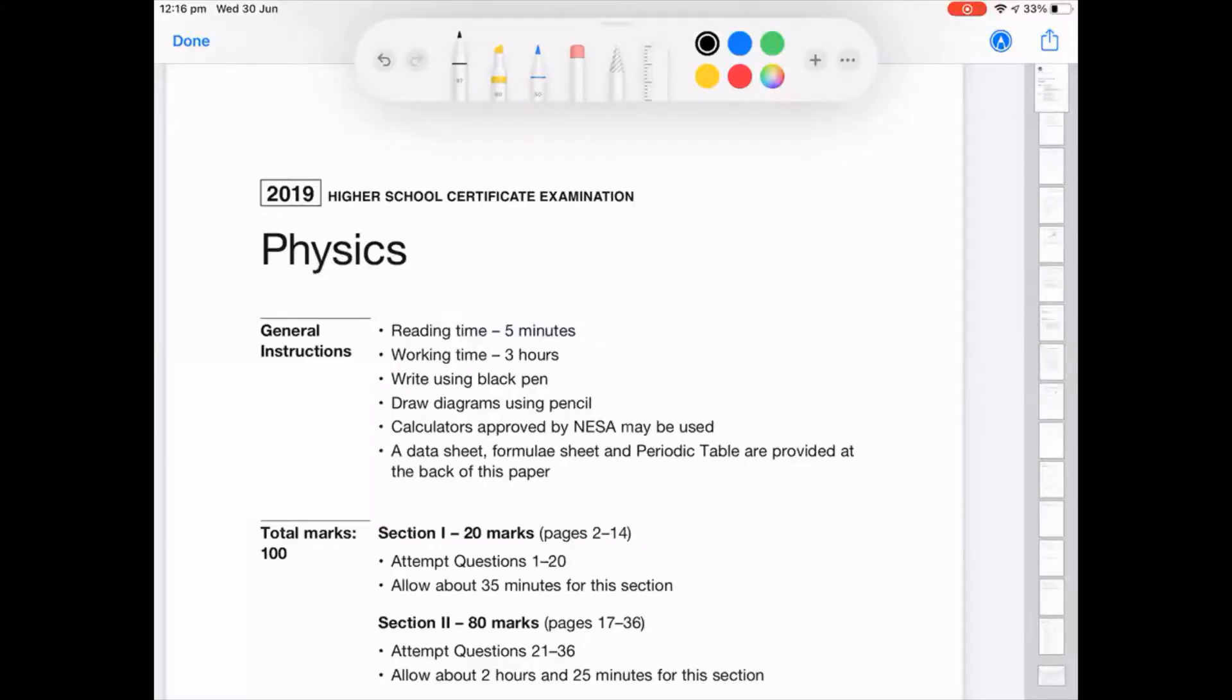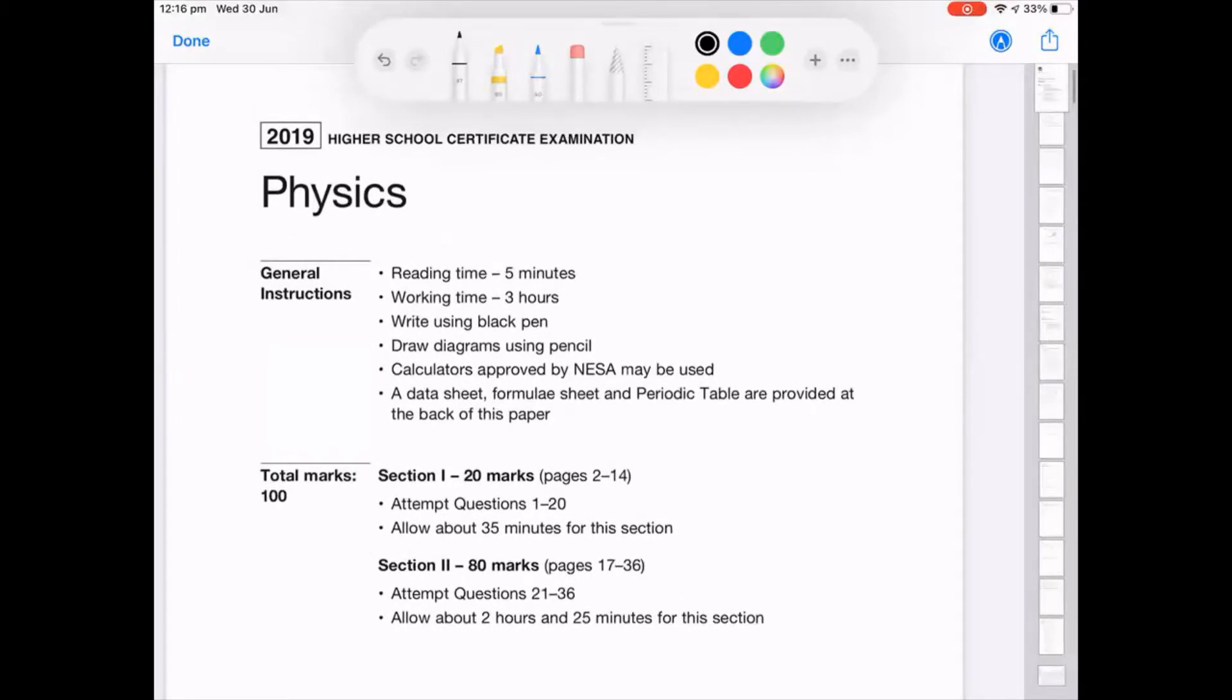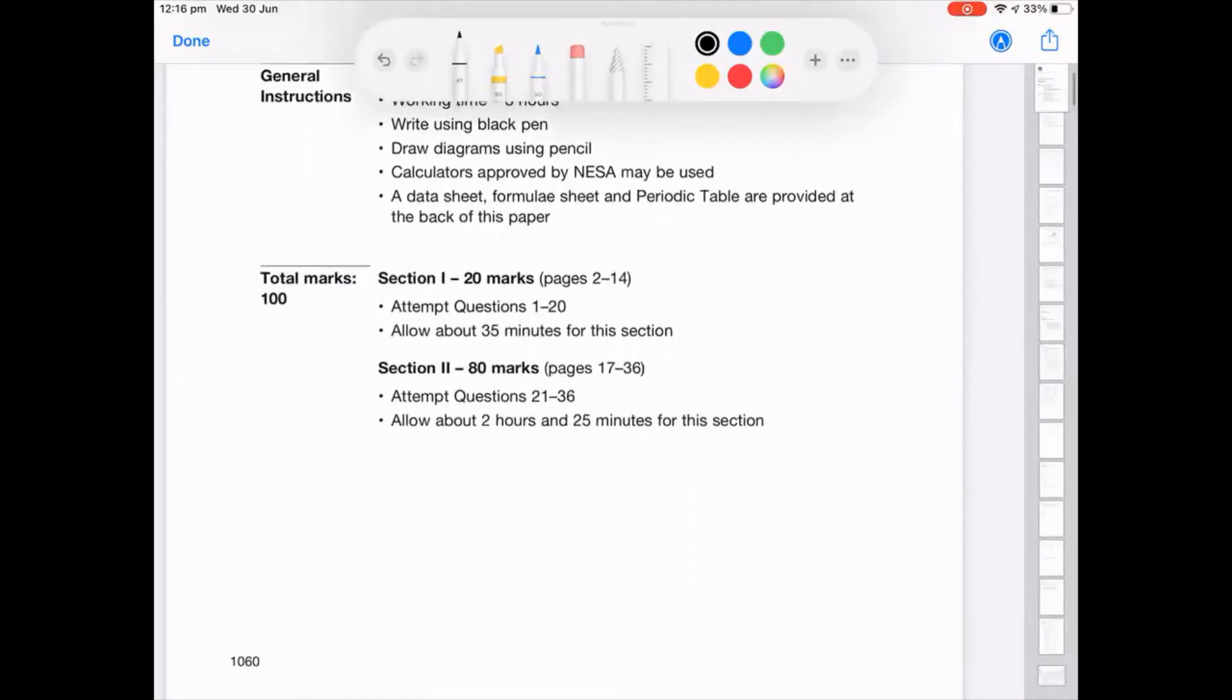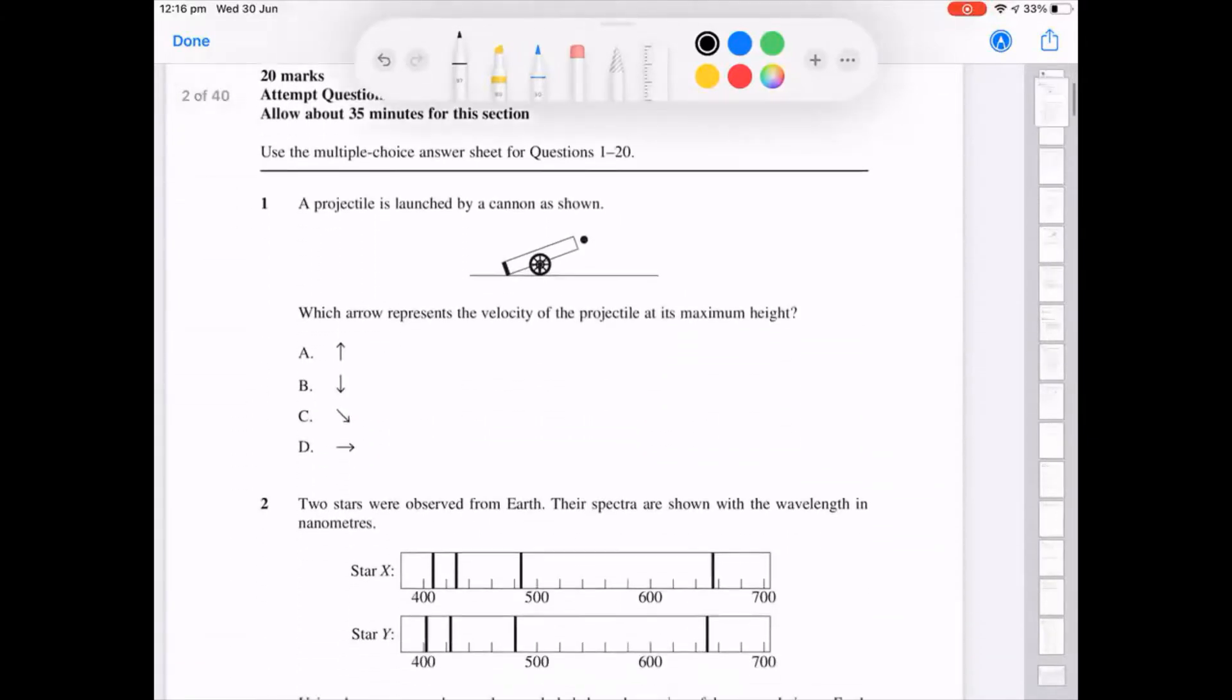In this first video we're just going to cover questions one to five of the 2019 physics HSC paper. So for question one we've got to look at the velocity of the projectile at its maximum height.